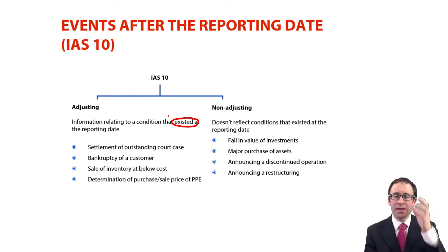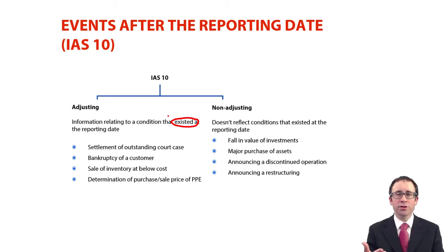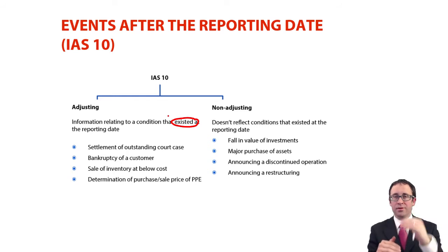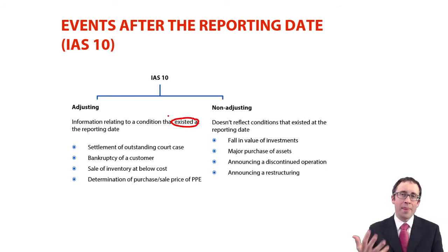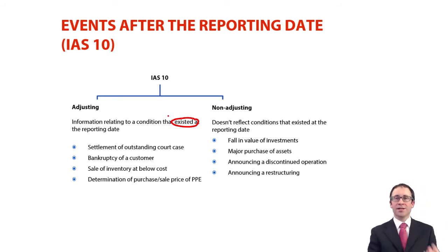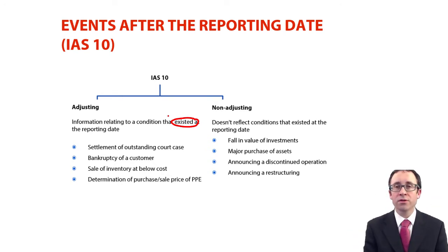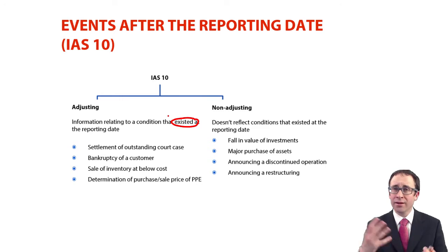Another adjusting event: if you sell inventory in the post-reporting date period below its cost — there's its cost, there's its NRV, it was measured at cost, and NRV has fallen to below cost after the reporting date — you do go through and adjust your year-end inventory. And if you have some PPE where you agreed to sell it at the reporting date so the condition existed, but hadn't yet negotiated a price, once that price has been negotiated before the accounts are signed off you can work out the profit or loss on disposal, or get a better assessment of the fair value if it's moved to a non-current asset held for sale.